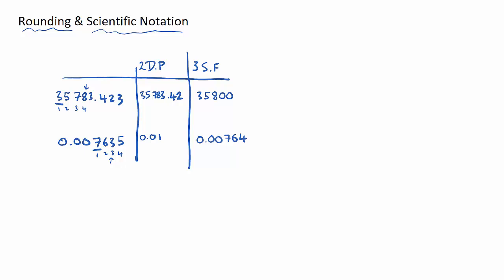Now I want to briefly touch on scientific notation. Questions in IB studies exams will say: leave your answer in the form A times 10 to the K, where A is a number between 1 and 10, and K is an integer — shown as an element of ℤ. This means we need to convert our answers so that the number in front of the ×10 is between 1 and 10, such as 1.53 or 2.76, and K is a whole number.